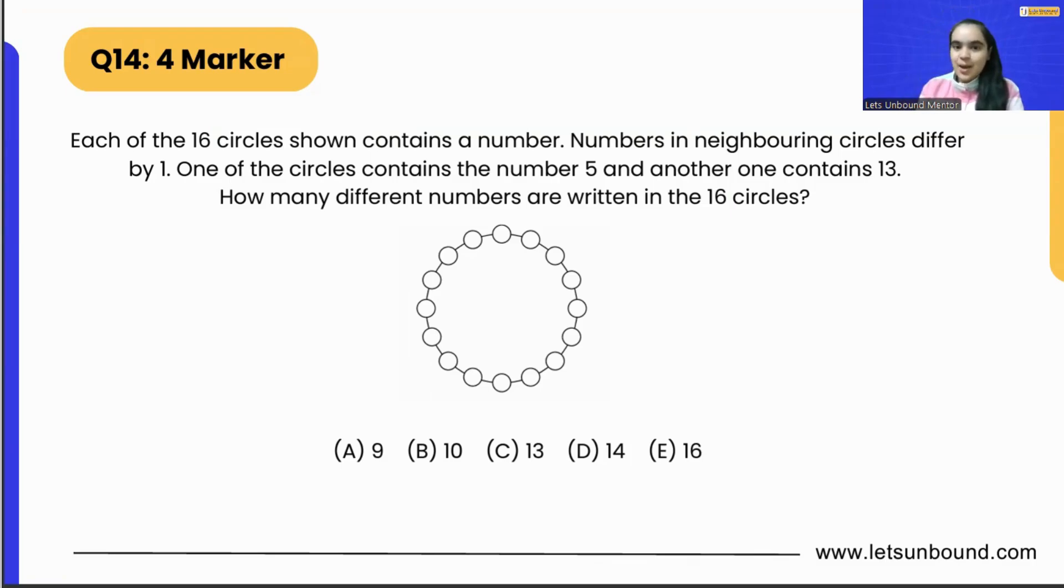Let's see. Each of the 16 circles shown contains a number. So in this circle we have 16 circles, these tiny tiny circles.